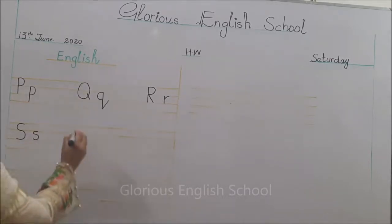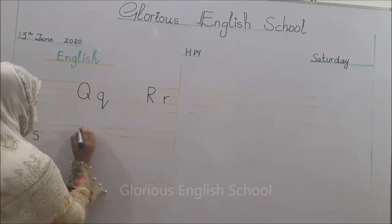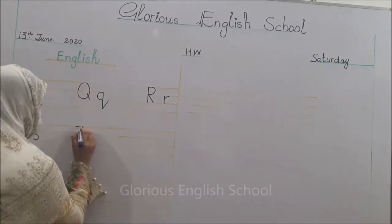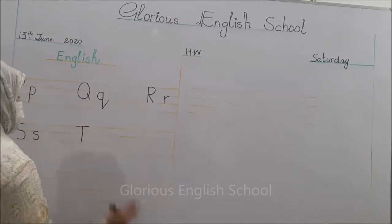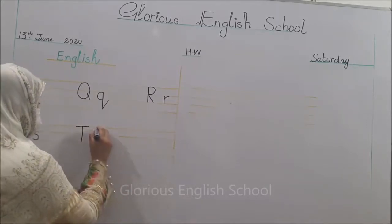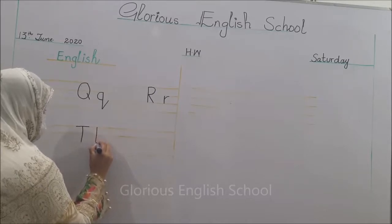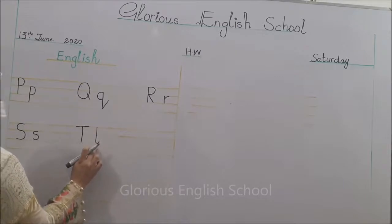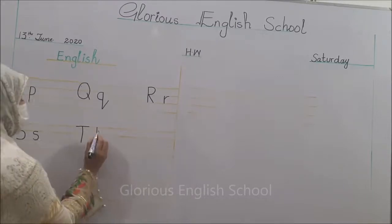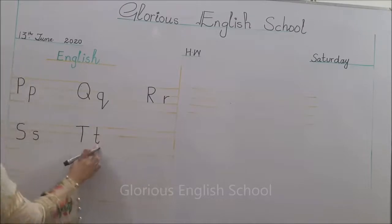Next is T. Standing line and short sleeping line से capital T बनता है। Small t के लिए standing line लाएंगे नीचे से थोड़ा सा curve बनाएंगे first three lines में, और छोटी सी sleeping line draw करेंगे तो यह small t बन जाएगा।